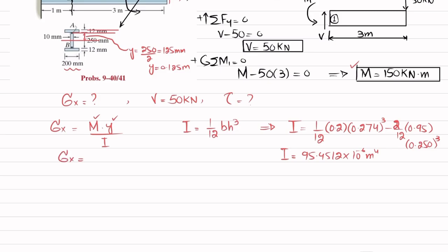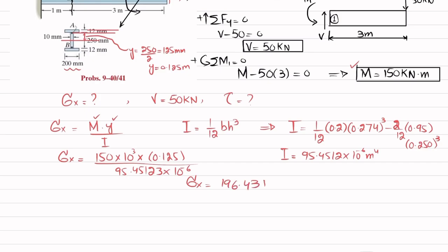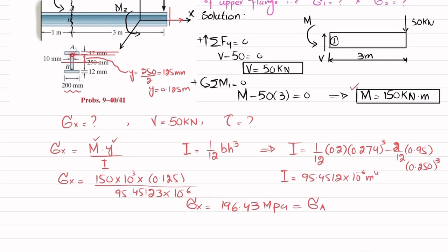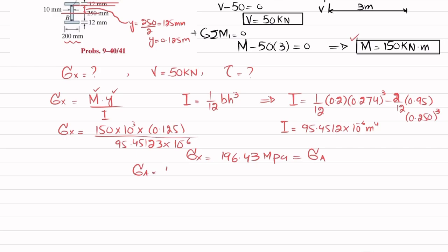Now we can calculate sigma x. Substituting: sigma x = M·y / I = (150 × 10³ N·m × 0.125 m) / (95.4512 × 10⁻⁶ m⁴). This gives sigma x = 196.43 MPa. Since this is calculated at point A, we call it sigma_A = 196.43 MPa.